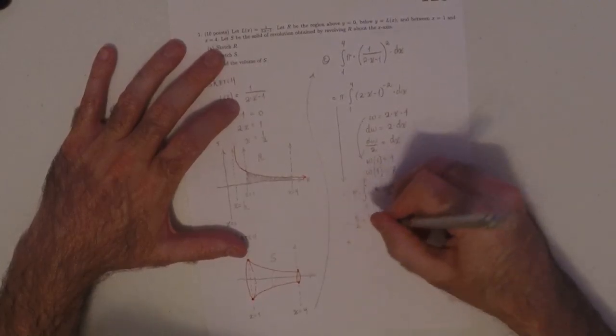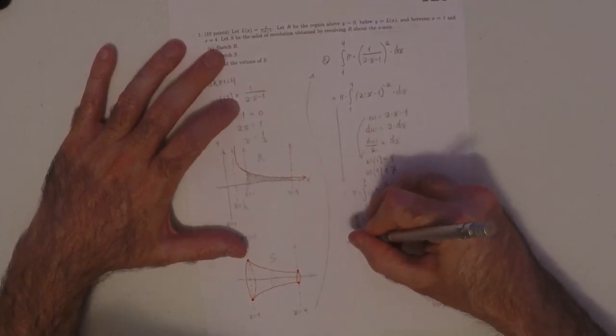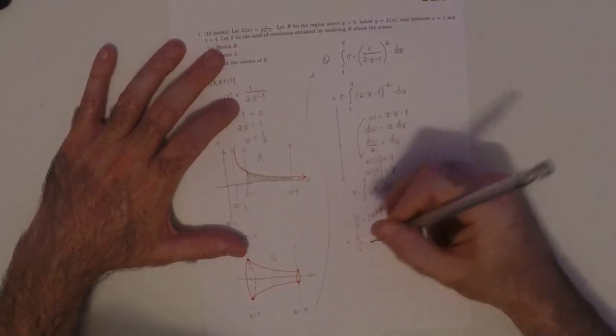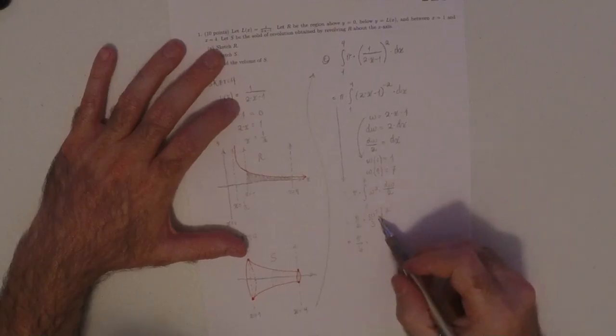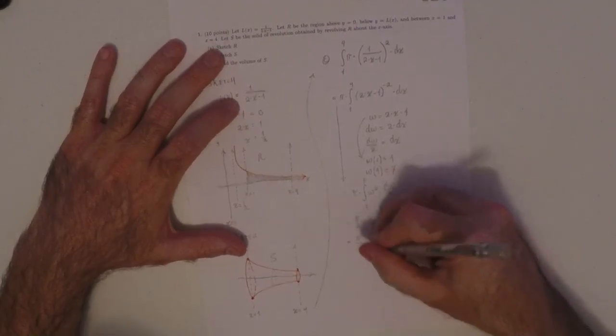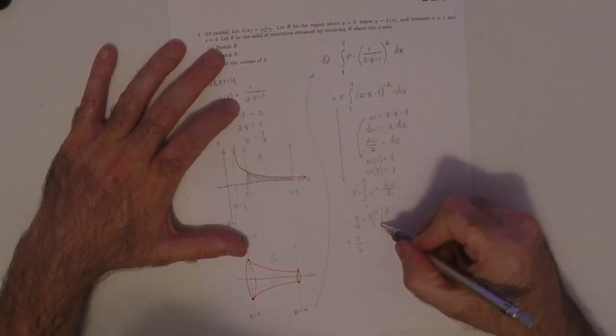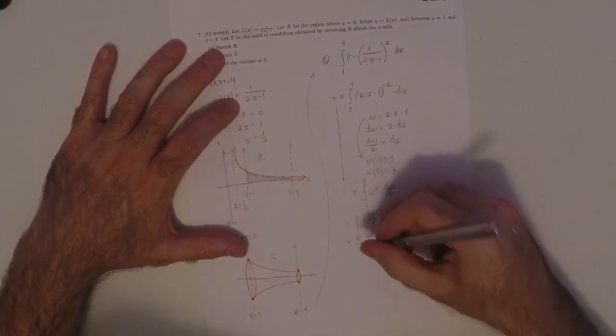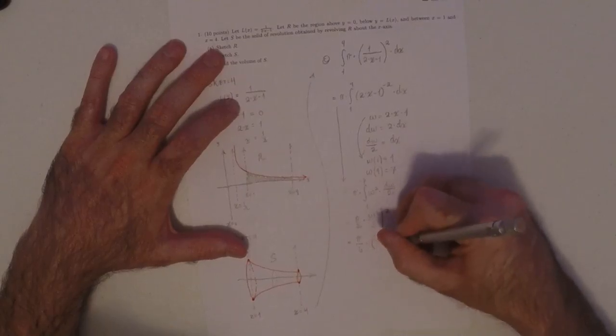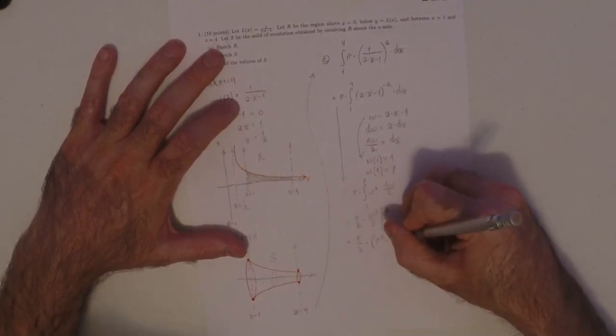So then, I could bring that division by 3 out, to be with the pi over 2, so that it's pi over 6. And, then I'll evaluate w cubed at the two positions there. So this would be 7 cubed, and then minus 1 cubed.